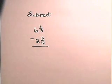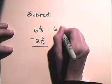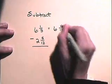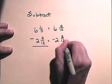Now, let's subtract 2 and 5 twelfths from 6 and one-third. Once again, we'll need to get a common denominator. In this case, it will be 12. So, 6 and one-third will be 6 and four-twelfths. And we will subtract 2 and five-twelfths.